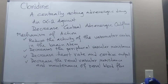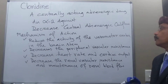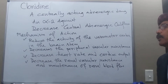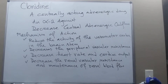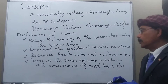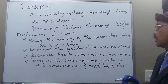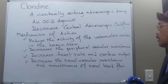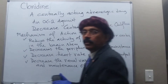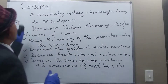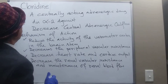To summarize the mechanism of action: it reduces the activity of the vasomotor center in the brainstem, particularly in the medulla oblongata tract. It decreases peripheral vascular resistance especially in the walls of the arteries, decreases heart rate and cardiac output, and decreases renal vascular resistance.